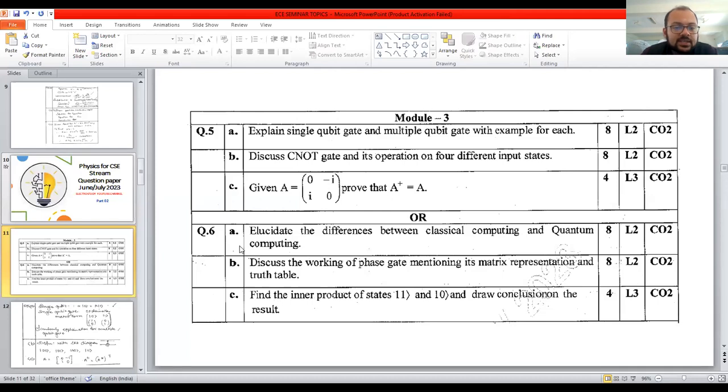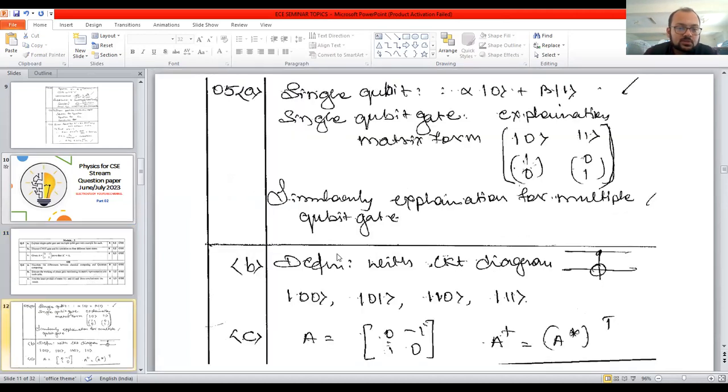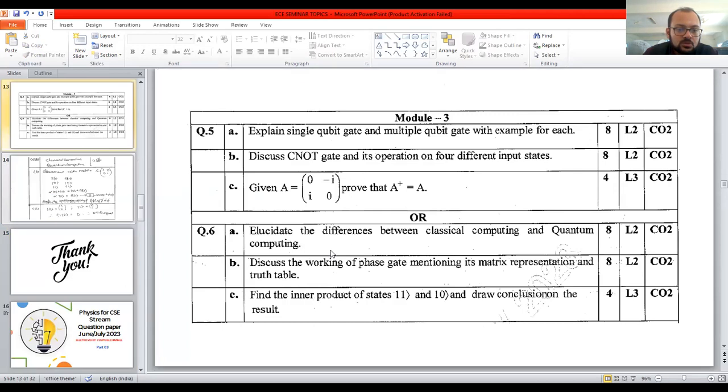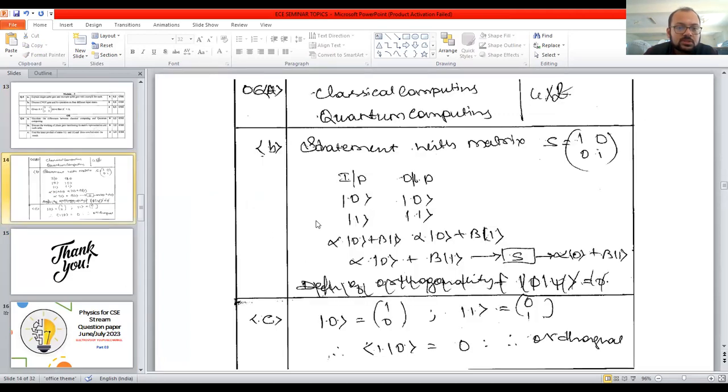Moving on to the discussion. Question number six A, that is clear. Question number six B: Discuss the working of phase gate mentioning its matrix representation and truth table.